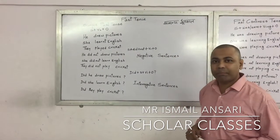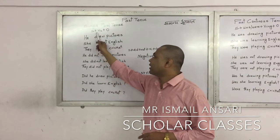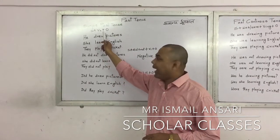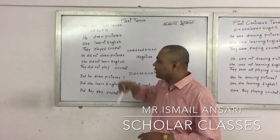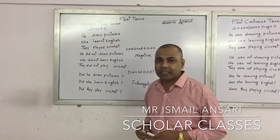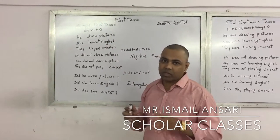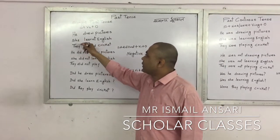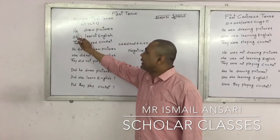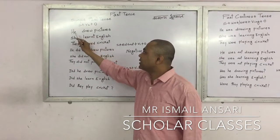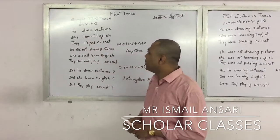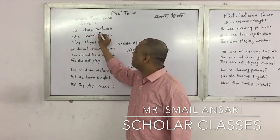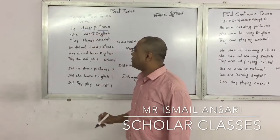The formula for simple past tense is subject, second form of the verb, and then the object. Now here are some sentences in positive form. He drew pictures — 'he' is the subject, 'drew' is the second form of the verb, and 'pictures' is the object.